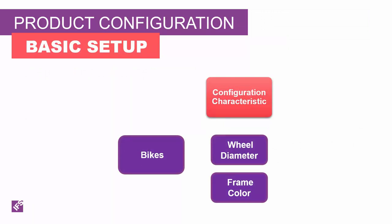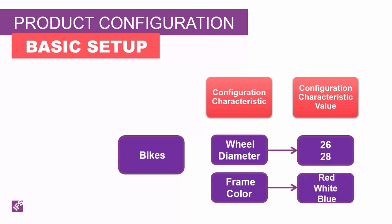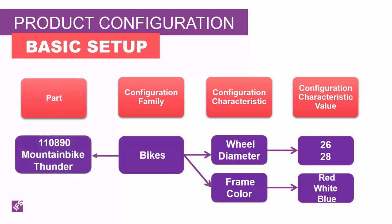Let's look closer at the basic data. A bike has two features: wheel diameter and frame color. For these characteristics, you define possible choices — configuration characteristic values. For a bike, we define values 26 and 28 for wheel diameter, and red, white, or blue for frame color. The characteristic value type for wheel diameter is discrete — only two predefined values. Frame color is also discrete with three predefined values. You also define a configuration family representing the product group, where the characteristics and their values are for the product group of bikes.